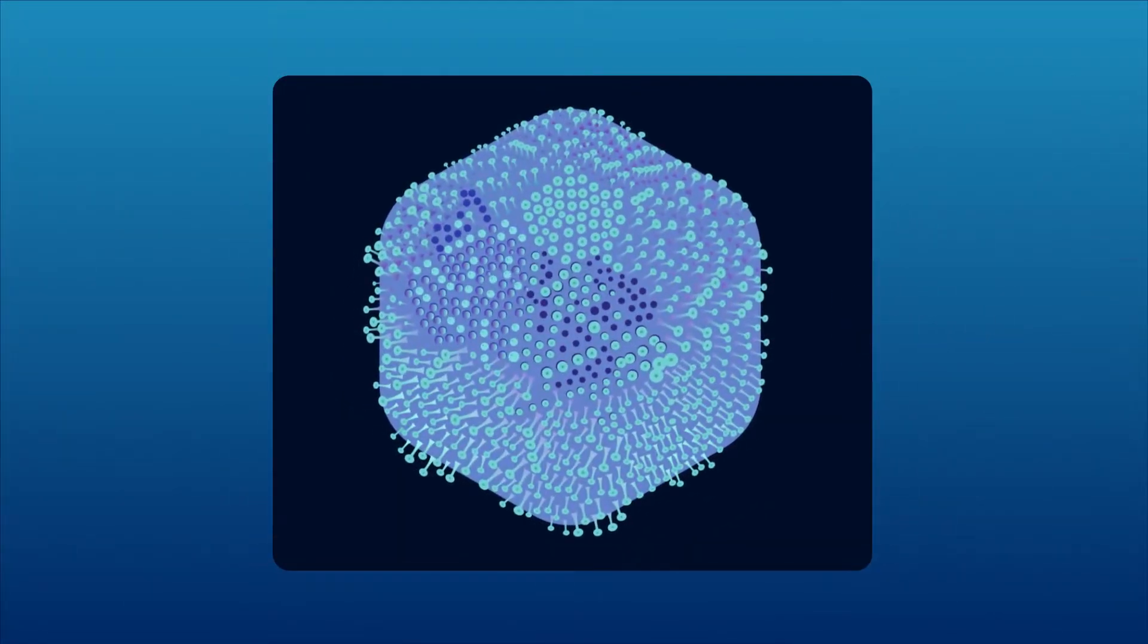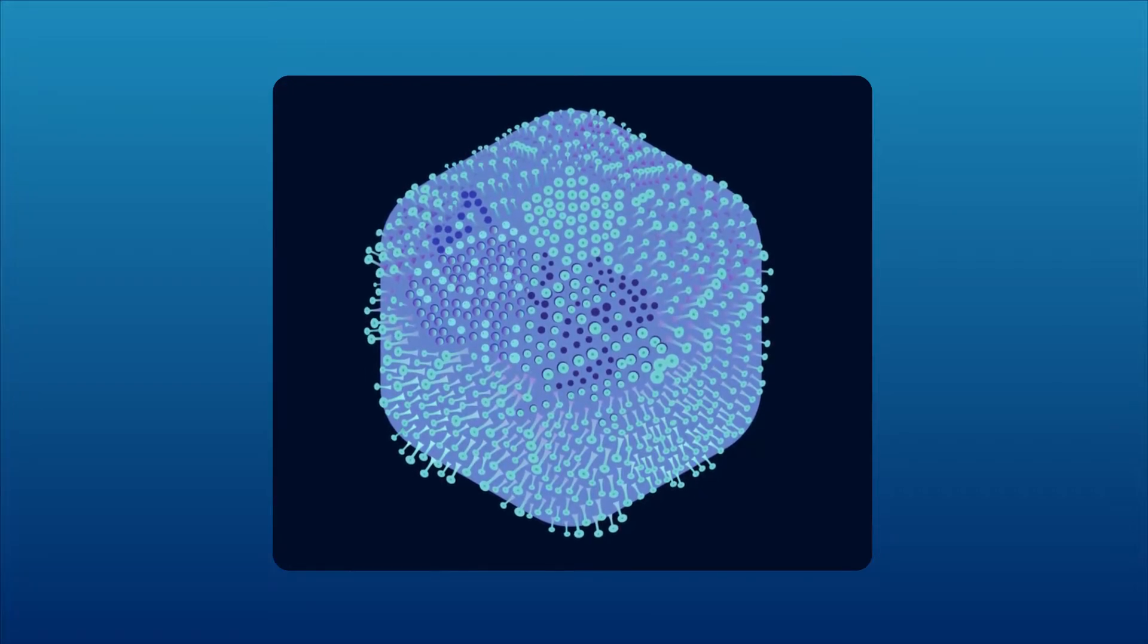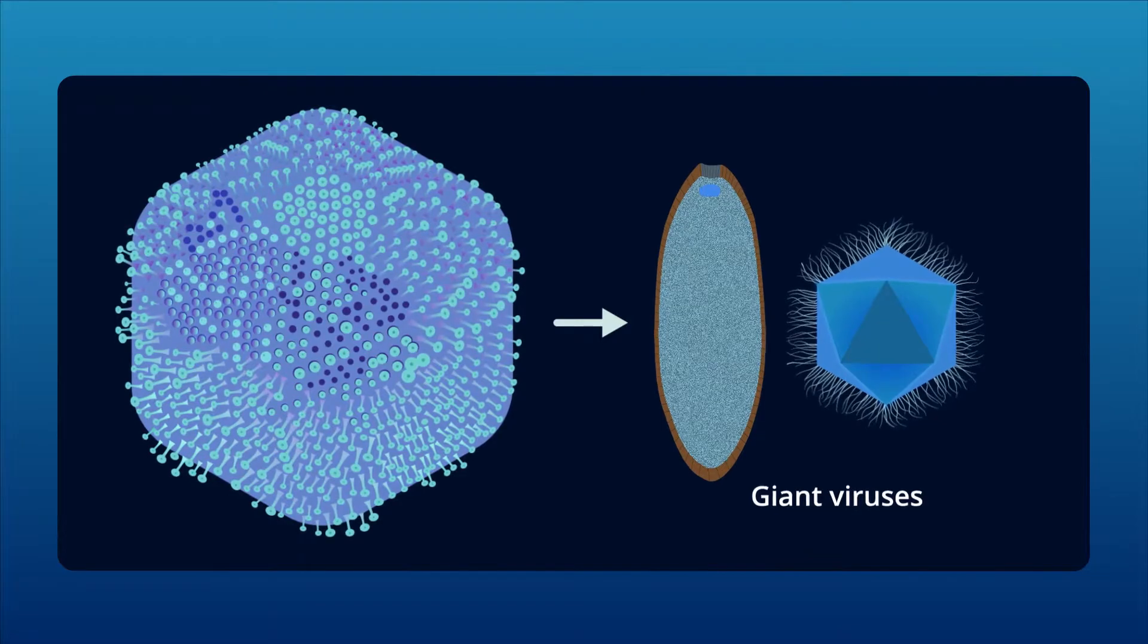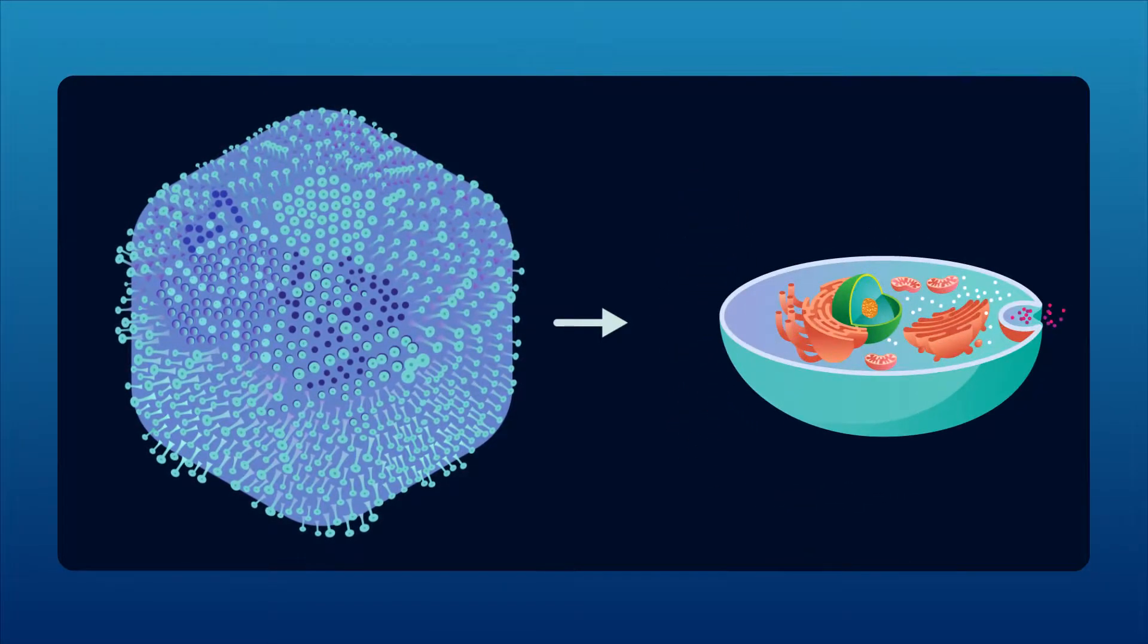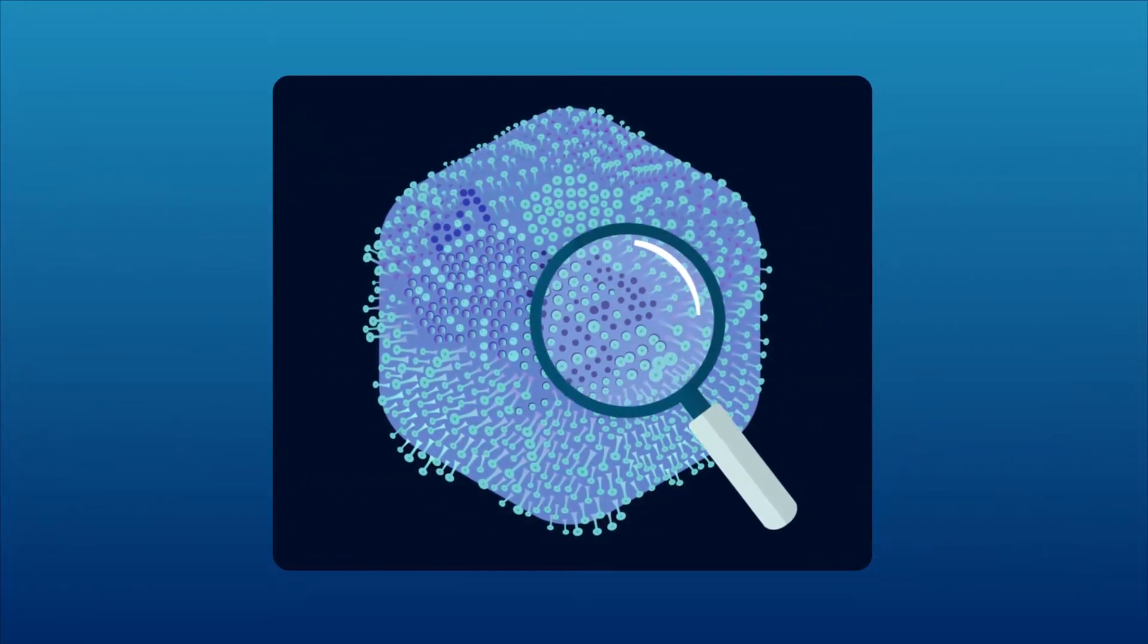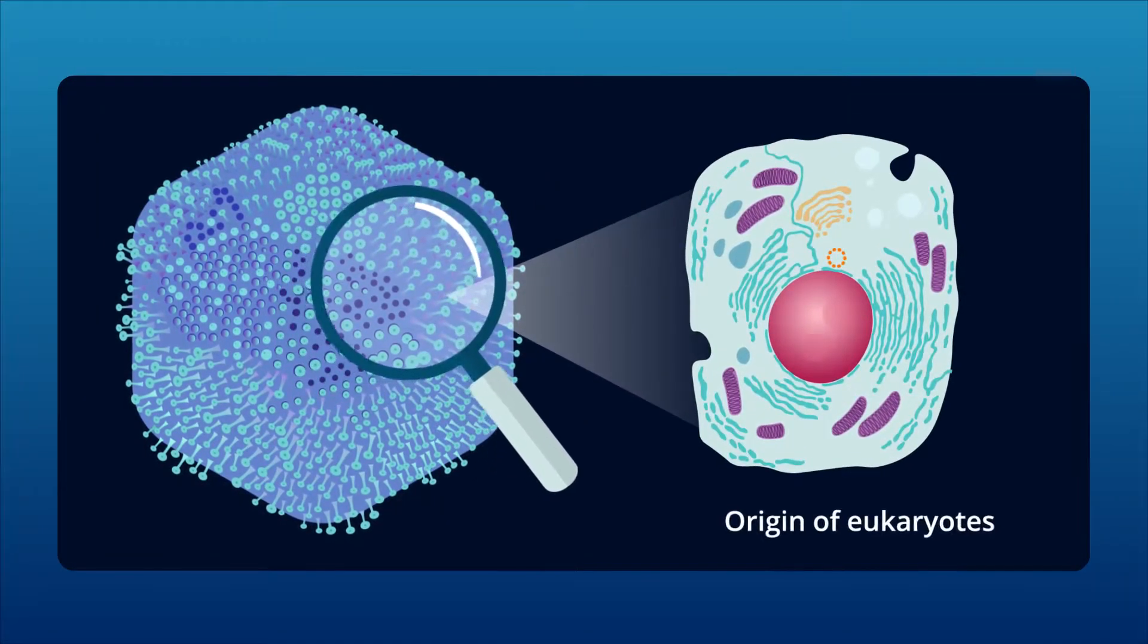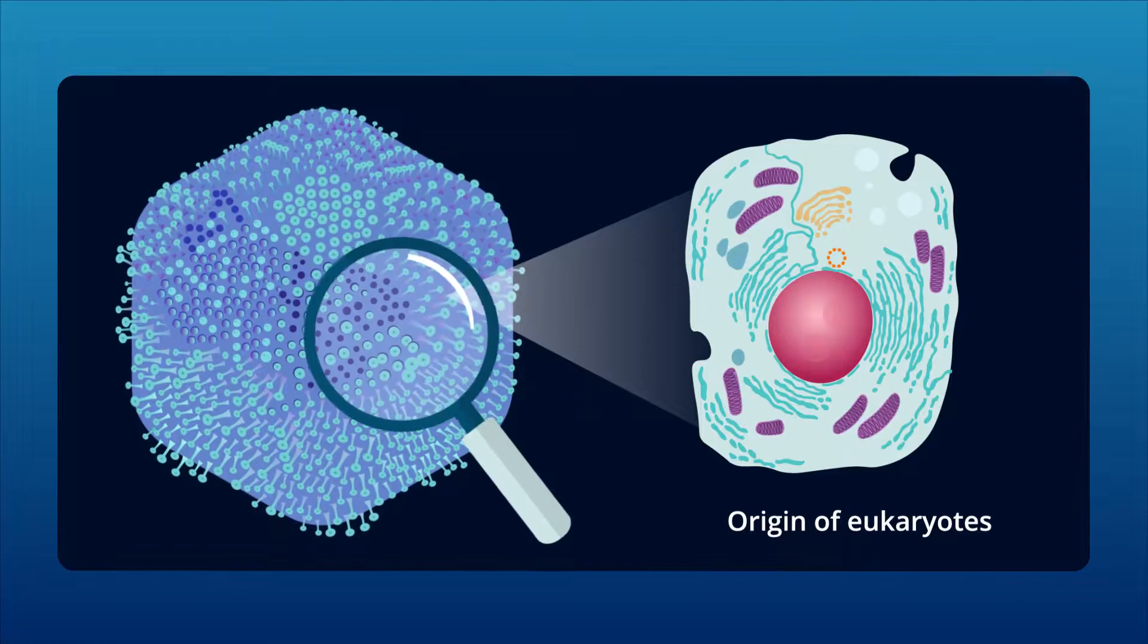Curiously enough, genetic analyses have suggested that, compared to other giant viruses, the Medusa virus is closer to eukaryotes. However, details of its morphology and maturation, which could help shed light on eukaryotic evolution, are not well understood.